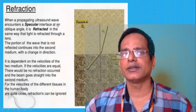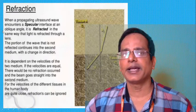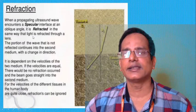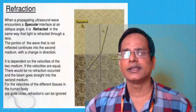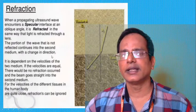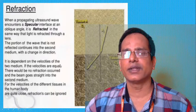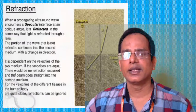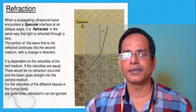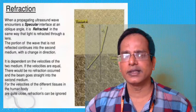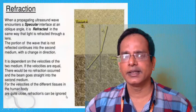When a propagating ultrasound wave encounters a specular interface at an oblique angle, it is reflected similarly to how light is reflected through a lens. The portion of the wave not reflected continues into the second medium with a change in direction, depending on the velocity of the two media. If the velocities are equal, no refraction occurs and the beam goes straight into the second medium. Since velocities in different tissues in the human body are quite close, refraction can generally be ignored.